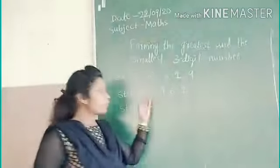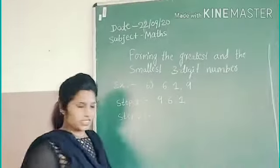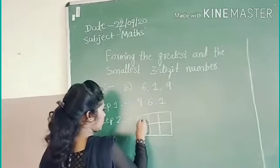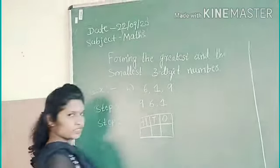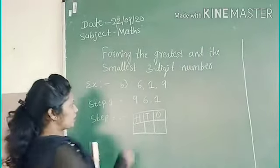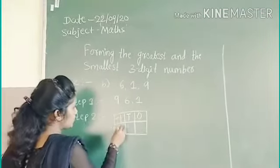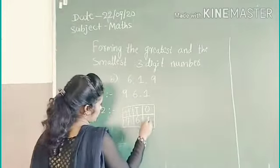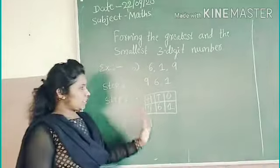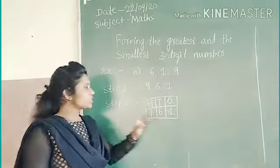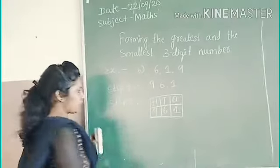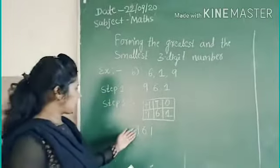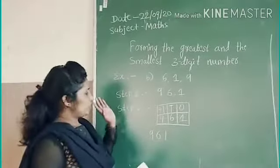Now we will put these numbers in a place value chart with 100s, 10s, and 1s. I will put 9 in the 100s place, 6 in the 10s place, and 1 in the 1s place. The greatest number with the given digits is 961. We will write 961 like this. 961 is the greatest number.